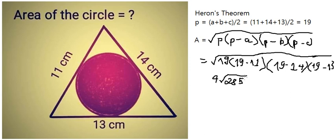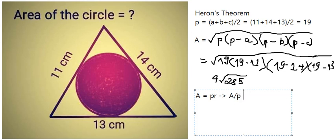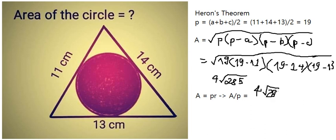Next we have another formula. That is A equals to pr, and r is the radius of the small circle in here. And we have A divided by p. So we put 4 multiply with the square root 285 divided by p is 19.